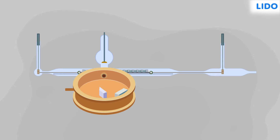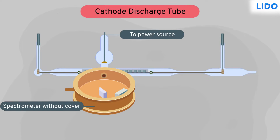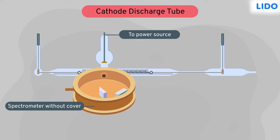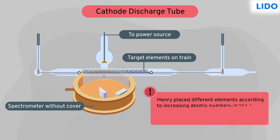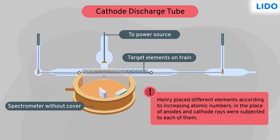Does this setup look similar to you? This is a cathode discharge tube. In the same tube, Henry placed different elements according to increasing atomic numbers in the place of anodes, and cathode rays were subjected to each of them.